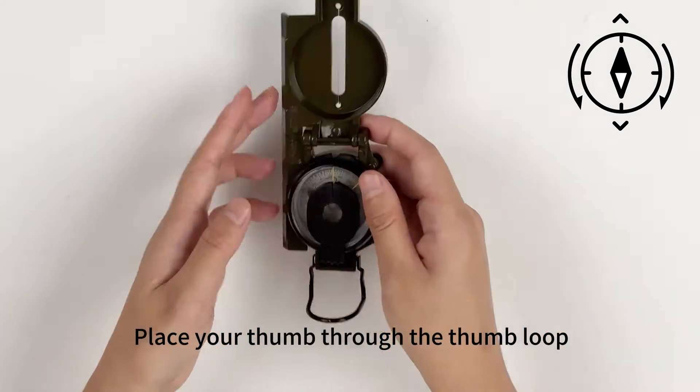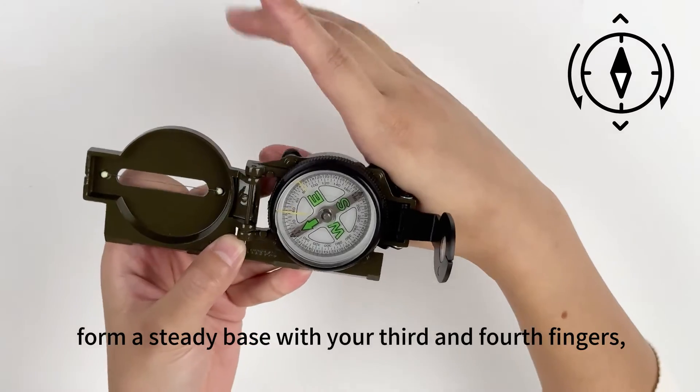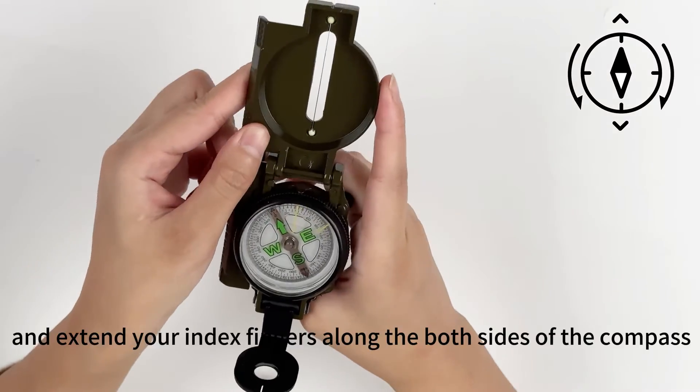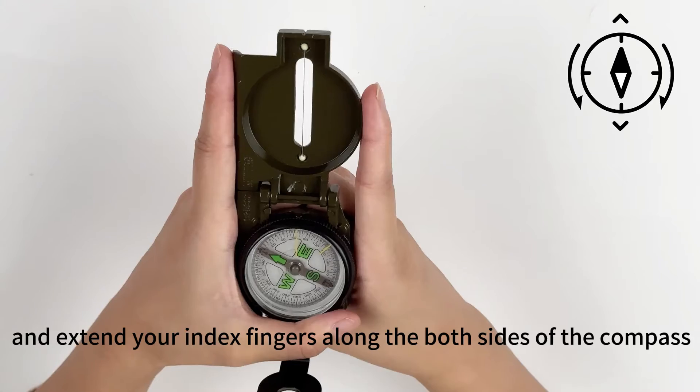Place your thumb through the thumb loop. Form a steady base with your third and fourth fingers, and extend your index fingers along both sides of the compass.